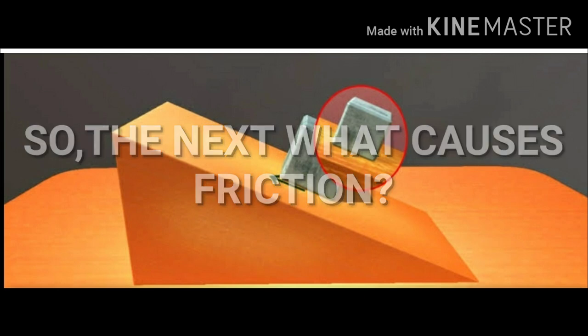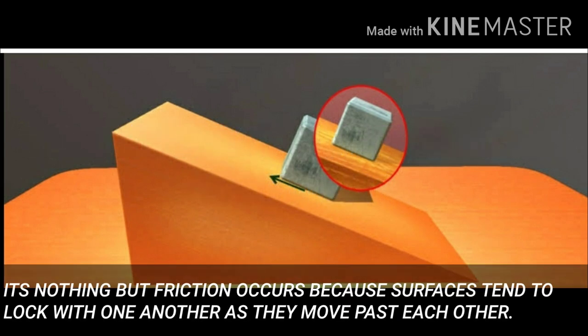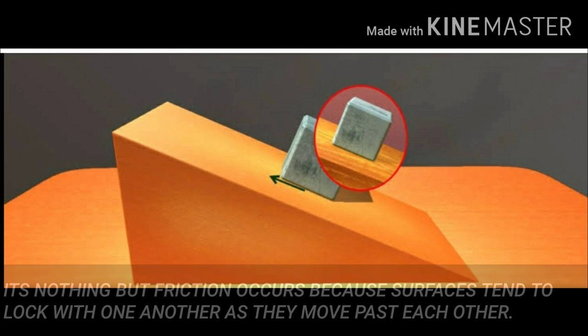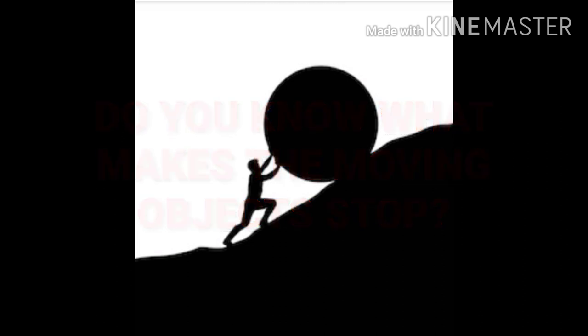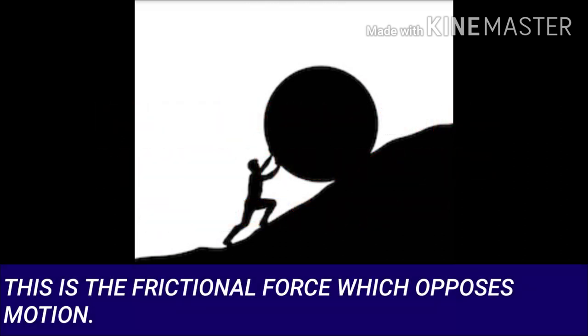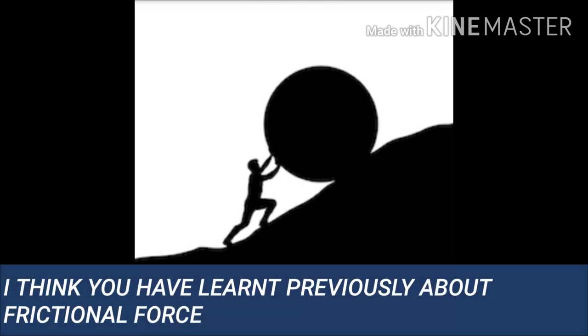What causes friction? Friction occurs because surfaces tend to interlock with one another as they move past each other. Do you know what makes the moving object stop? This is the frictional force which opposes motion.